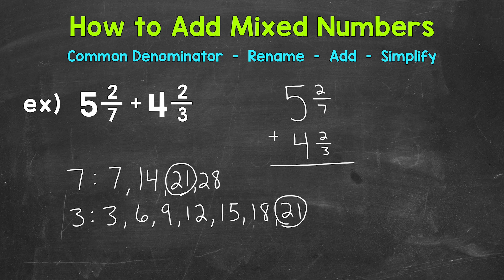So once we have that common denominator, we're going to rename the fractional part of our mixed numbers with that common denominator. That way, we'll be able to add. So let's go over to our mixed numbers here and rename. We do not need to do anything with the whole numbers.